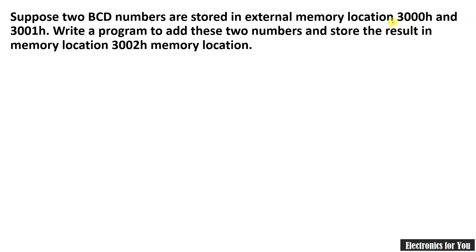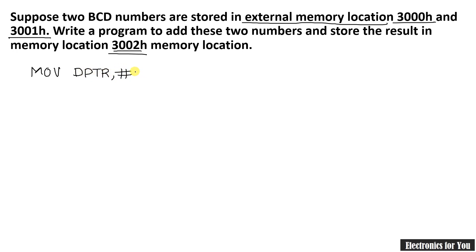The next program for BCD addition has two numbers stored in external memory locations 3000h and 3001h, and we have to store the result in memory location 3002h. Since external memory locations are used, we first initialize the memory pointer using DPTR: MOV DPTR, #3000h. That loads DPTR with the initial address 3000h.